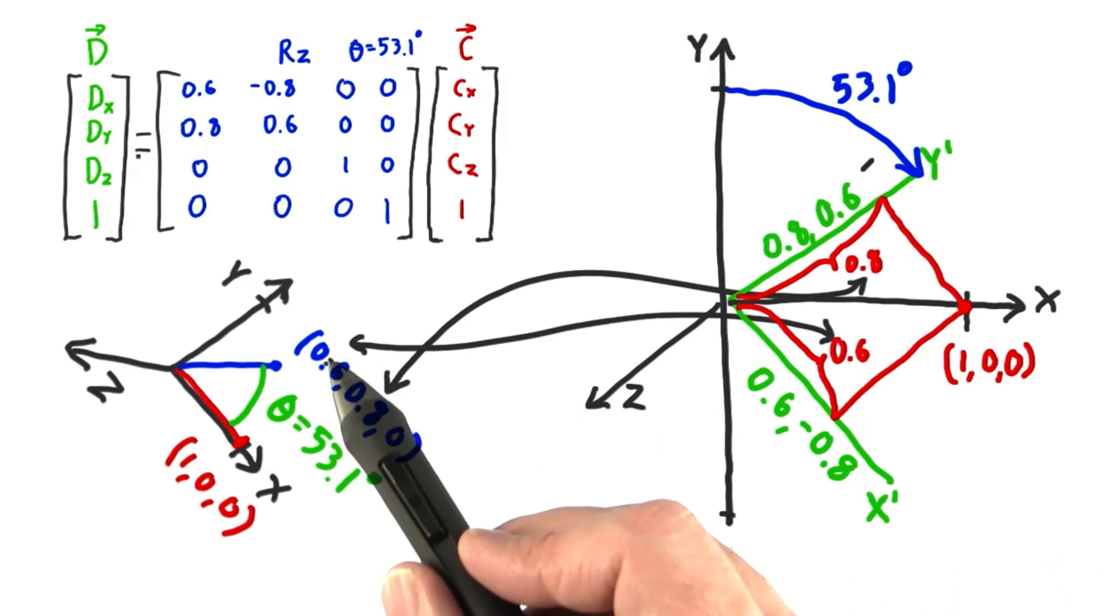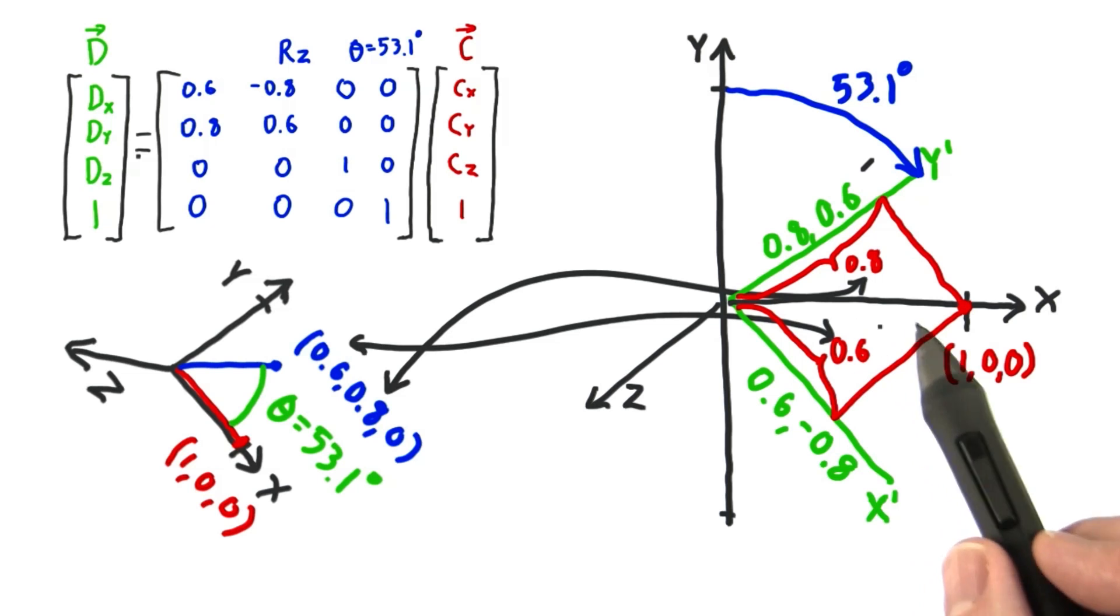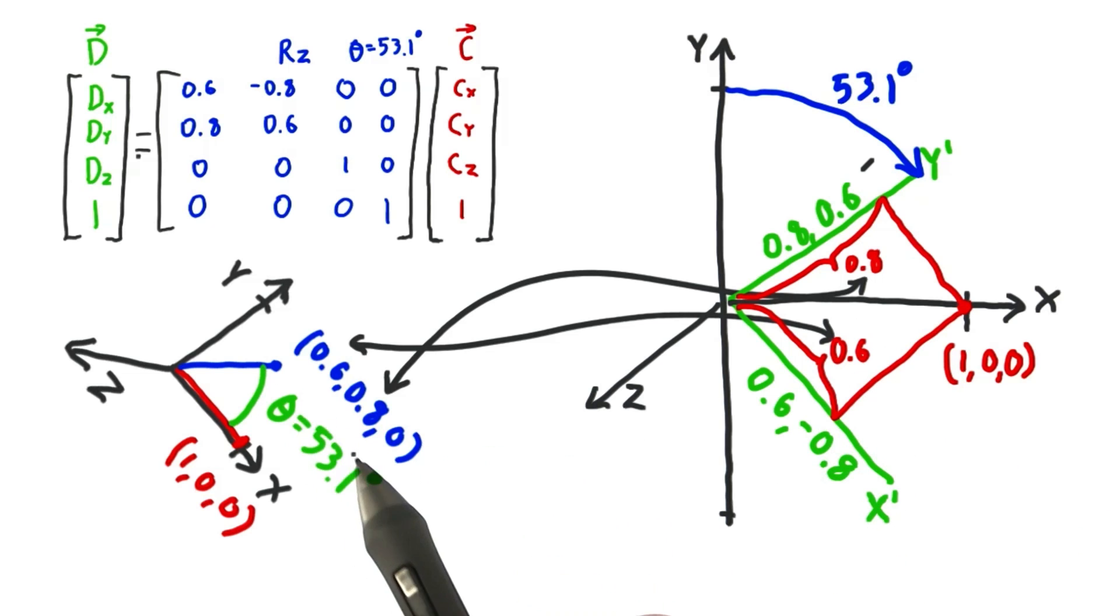For example, 0.6 is here, and 0.8 goes over here. A dot product projects one vector onto another, which is what gives us these coordinates.